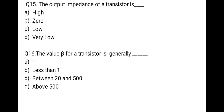The next question: the output impedance of a transistor is — the correct option is high. High output impedance means the output junction is reverse biased.